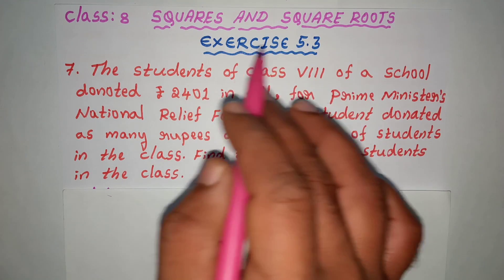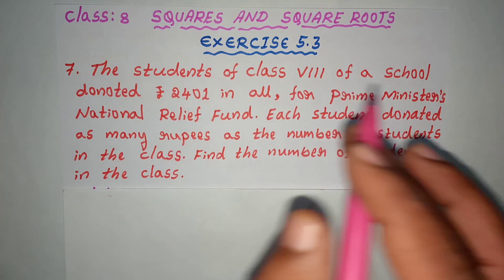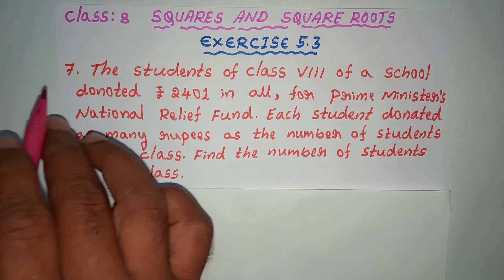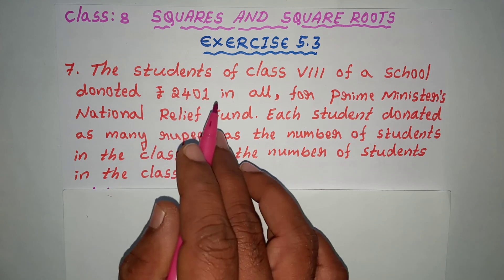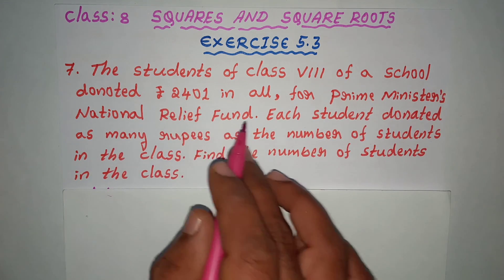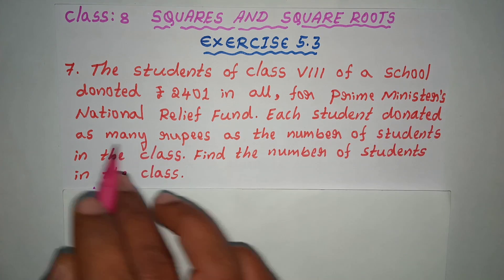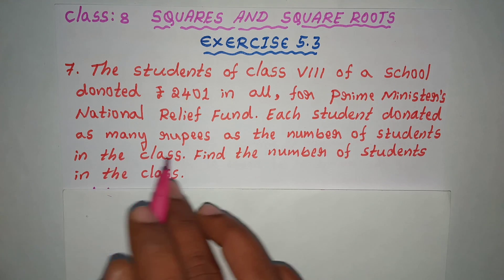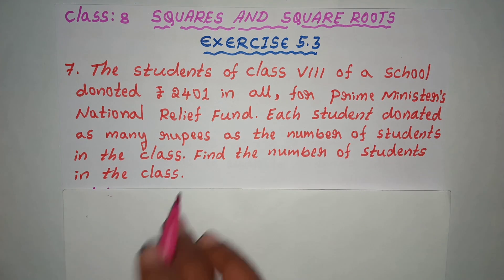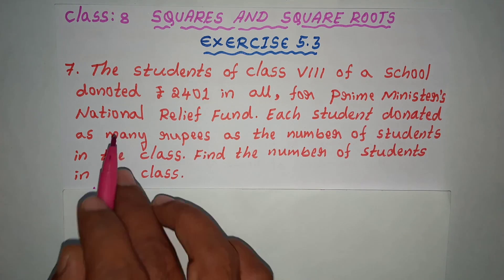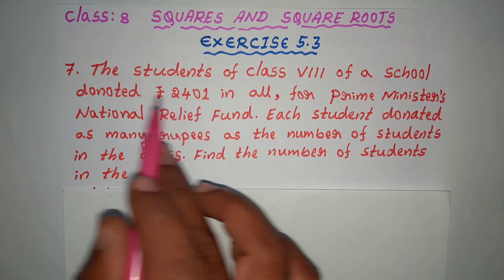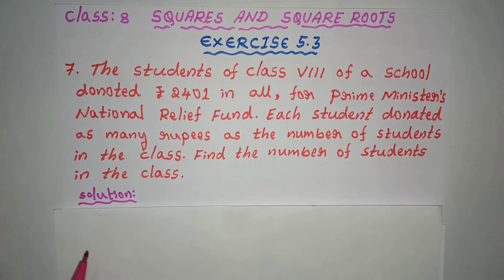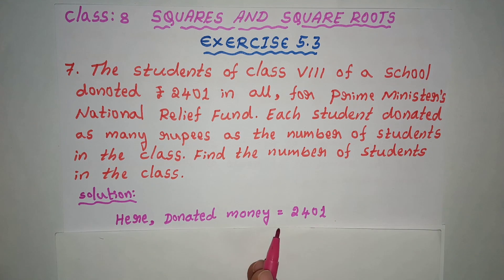Squares and Square Roots, Exercise 5.3, problems 1 to 6. The students of class 8 of a school donated rupees 2,401 in all for the Prime Minister's National Relief Fund. Each student donated as many rupees as the number of students in the class. Find the number of students in the class. The total donated money is equal to 2,401.